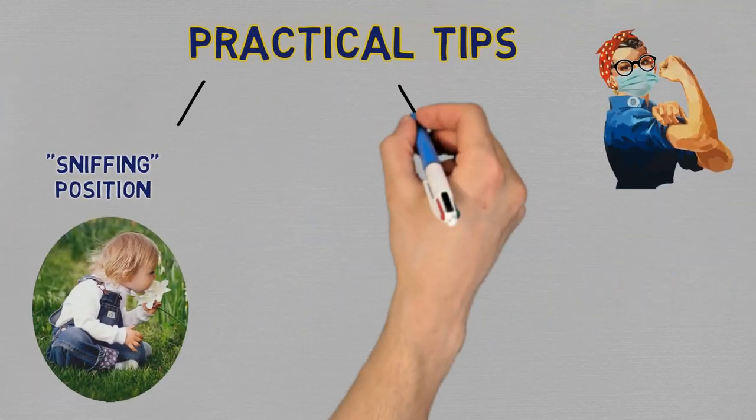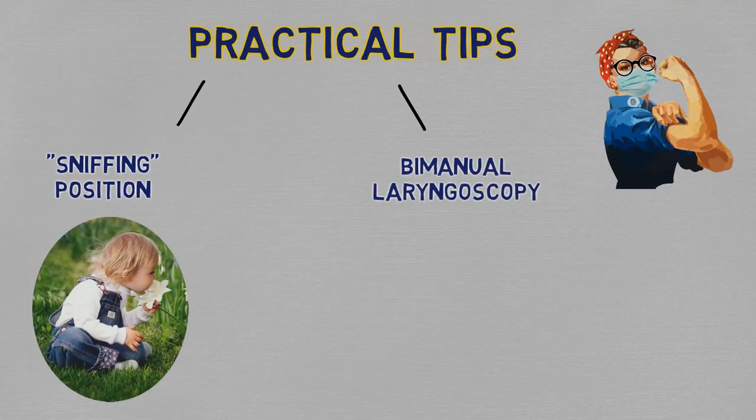The second tip I want to give you is bimanual laryngoscopy. What? Which means you use both hands to get a view of the larynx. One holding the laryngoscope like you normally would and the other to actually move the larynx and place it where it'll best suit your angle of view.